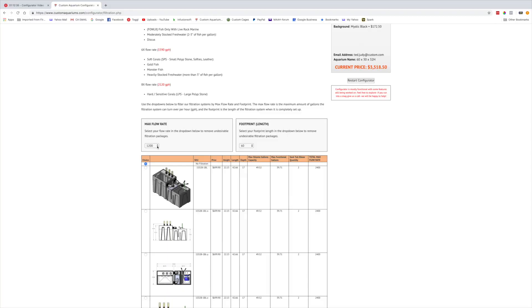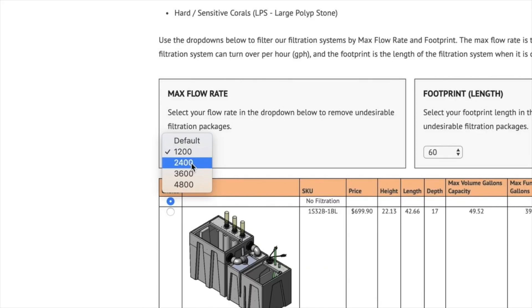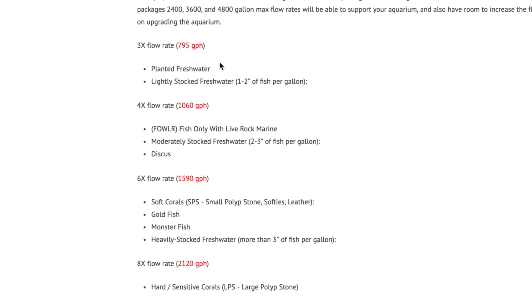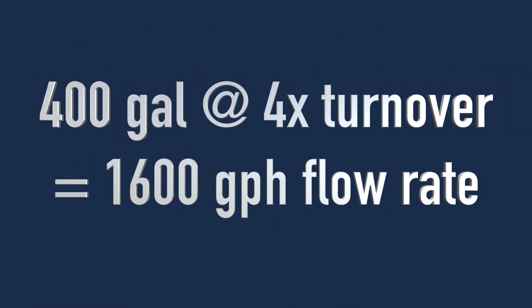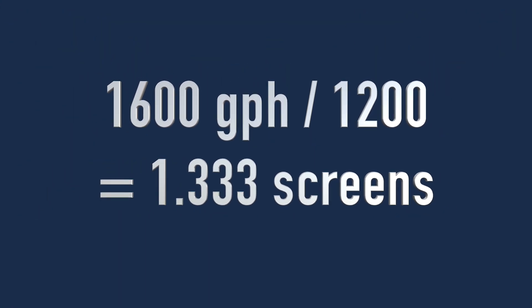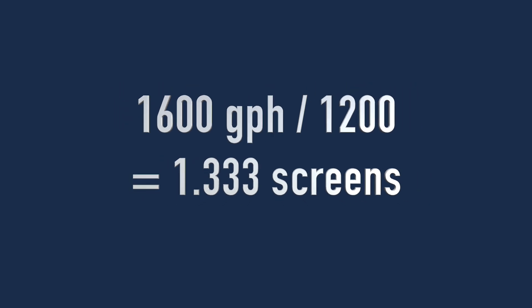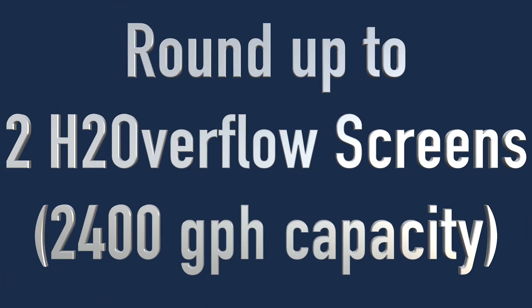The configuration program on the Custom Aquarium's website has a tool to help you calculate the amount of filtration that the aquarium being designed needs, and will show you some filter system options that will do the job. The configurator also has recommendations for the turnover rate — the number of times all the water in the tank should pass through a filter in an hour — for different types of aquariums. Decide the maximum flow rate you want for the system and divide that number by 1200 gallons per hour to calculate the number of H2 overflow screens you will need in the aquarium. Round up to a whole number.